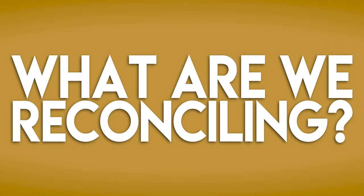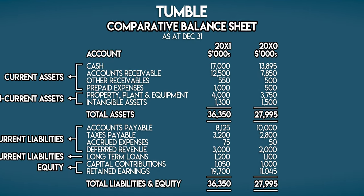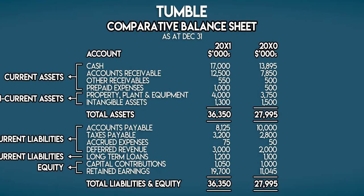Let's begin. What are we reconciling? Cash! This is a cash flow statement after all, so let's head over to Tumble's comparative balance sheet. We can see that they held $13,895,000 in cash at the end of last year, and this number increased to $17 million at the end of this year. So we can lift these numbers and place them at the bottom of our indirect cash flow statement. Overall, that's a net increase in cash of $3,105,000. Let's start with cash flow from operating activities. In step one we need to find Tumble's net profit or loss for the current year — we can get it from the income statement. On the bottom line, we can see that Tumble earned $9,650,000 this year from their core operations. We'll take Tumble's net profit and put it right at the top of cash flow from operating activities.